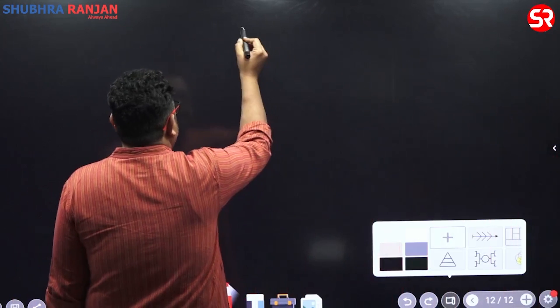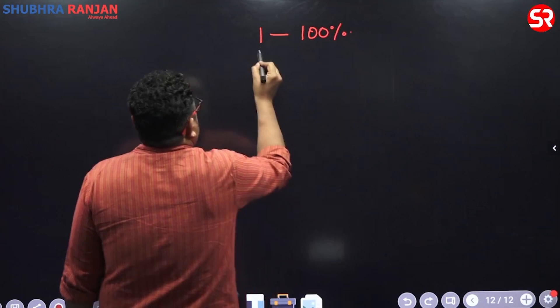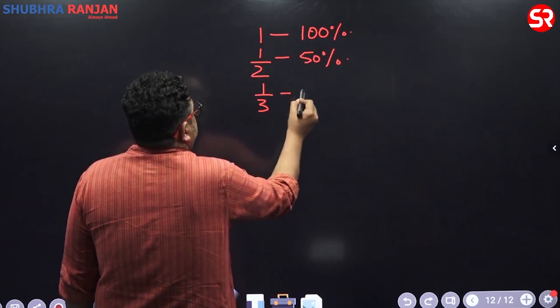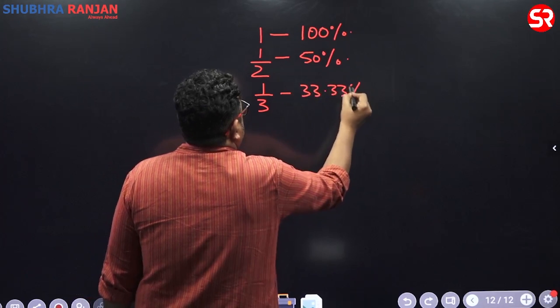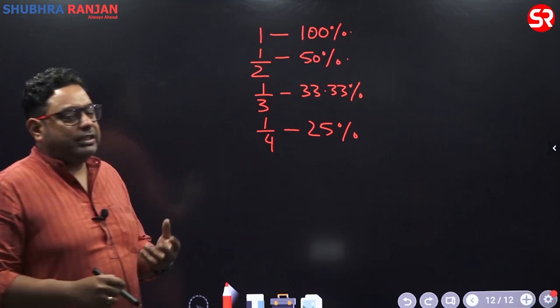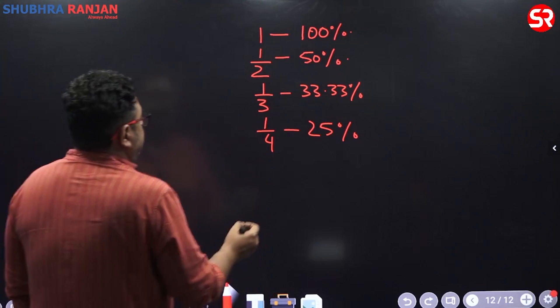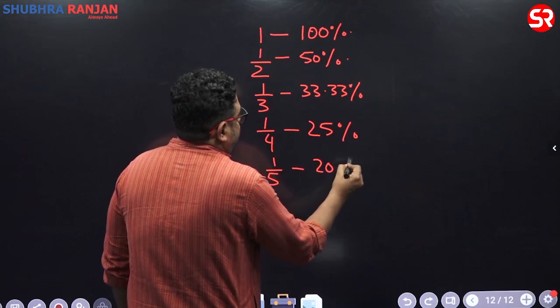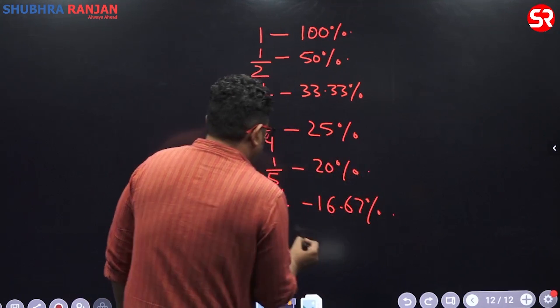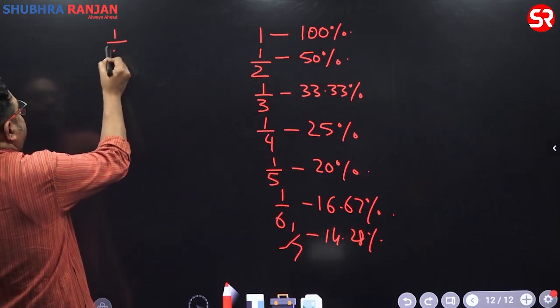But now, let's create something. I say 1 corresponds to 100%, 1/2 corresponds to 50%, 1/3 corresponds to 33.33%, 1/4 is 25%. Many students would ask me, sir, why should we remember it? I will come to that as well. So kindly mark it, kindly note it.